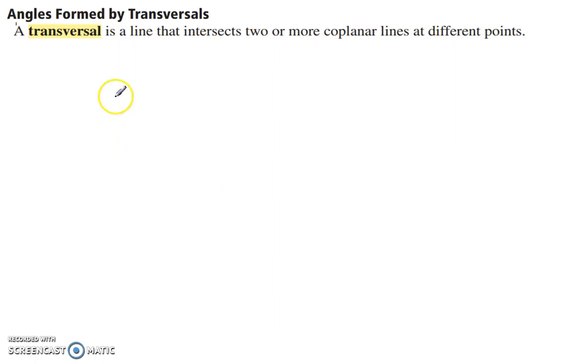Alright, a transversal, angles formed by transversals. Transversal is a line that intersects two or more coplanar lines at different points.